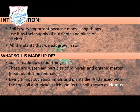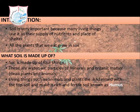Soil also contains organic matter. What is organic matter? When plants and animals die, they fall onto the land and after some time they decompose — they no longer exist in their original form. When living things like plants die, they get mixed with the topsoil. This makes the soil rich and fertile. This decomposed material is called humus, and it makes the land fertile.